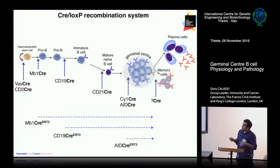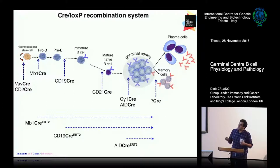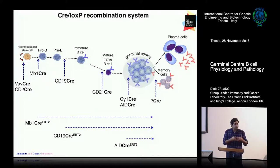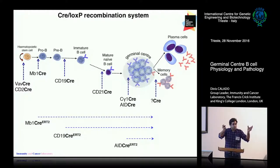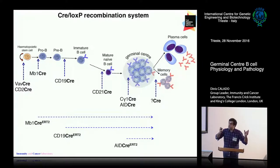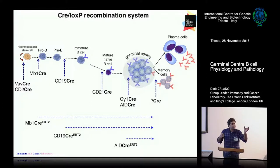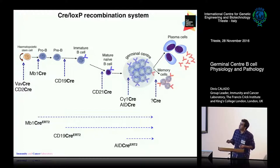For that, we take advantage of a system developed a long time ago in which there is an enzyme that is exogenous to mammals — mammals do not have this enzyme — which is called Cre. What Cre does is recognize sequences that you can introduce by genetic manipulation in the genome of mice, called LoxP sequences, and Cre is able to recognize these sequences and modify the genome in that way.